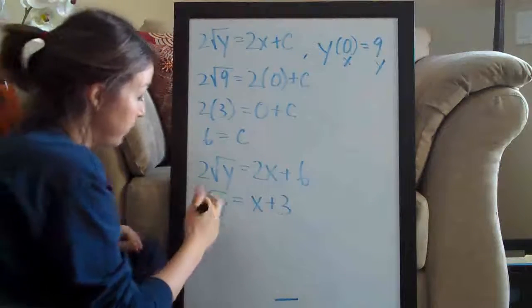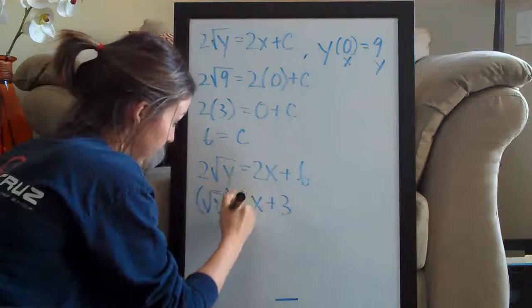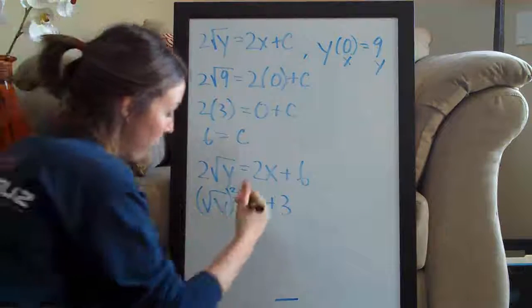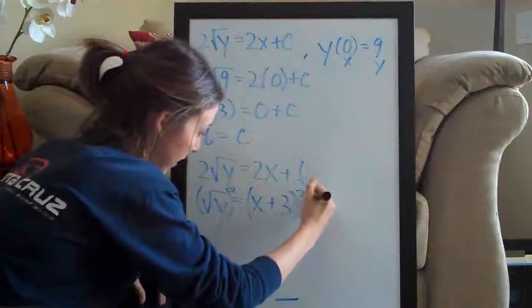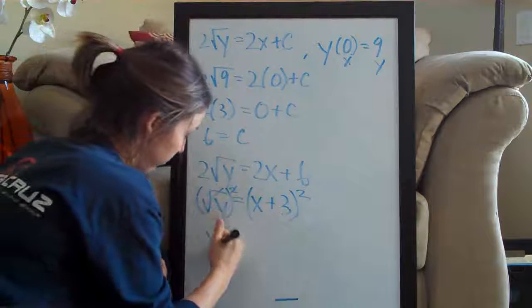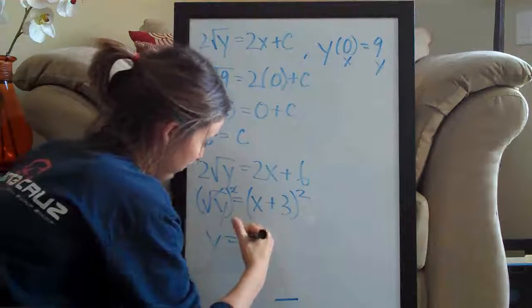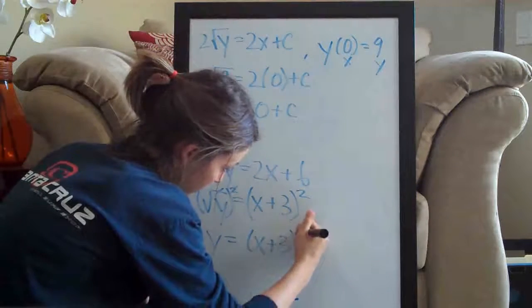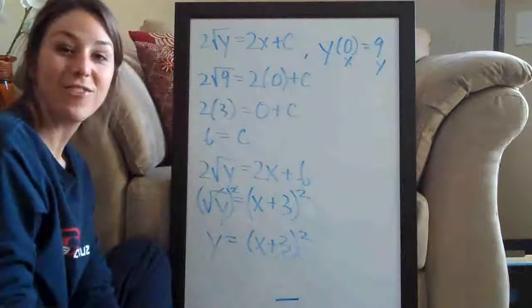And now we need to square both sides. If we square a square root, the square root will go away. So we square both sides and the square root cancels, and we're just left with y equals (x plus 3) squared. And that's our final answer.